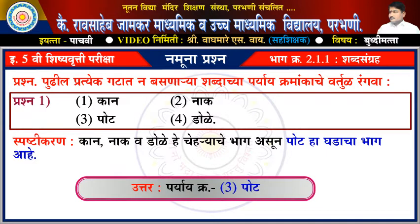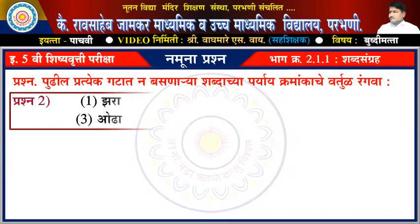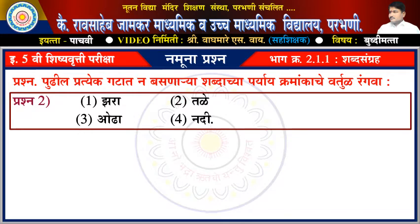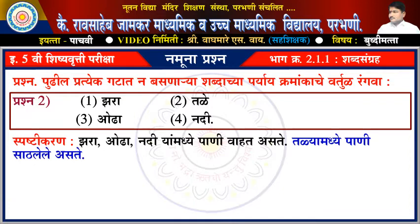ઉત્તર: પર્યાય ક્રમાંક તીન. પ્રશ્ન દુસરા: એક જારા, દોન તળે, તીન ઓઢા, ચાર નદી. સ્પષ્ટિકરણ: જારા, ઓઢા, નદી - યામધ્ધે પાની વાહાત અસ્તે, તર તળ્યામધ્ધે પાની સાઠવલેલે અસ્તે.